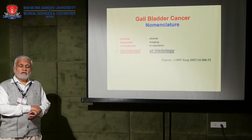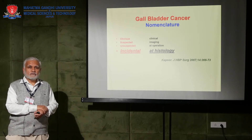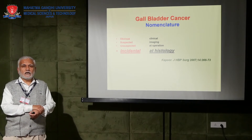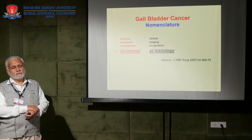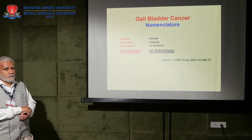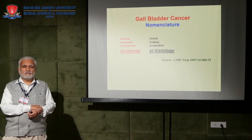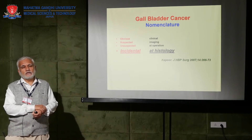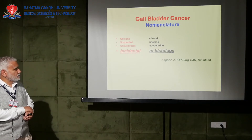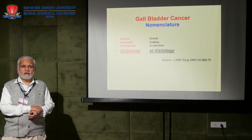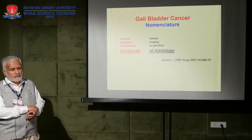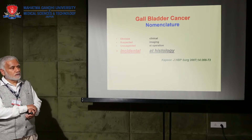Next, if even imaging findings are suggestive of gallstone disease only and the patient is taken up for a simple cholecystectomy for gallstone disease, but either during the operation or in the specimen there is any suspicion, then we propose that it should be called unsuspected gallbladder cancer. A true incidental gallbladder cancer is where up to this stage — that means up to the gross examination of the gallbladder specimen removed with the clinical and imaging diagnosis of gallstone disease — there is no suspicion of gallbladder cancer, and it is only on histopathology that a malignancy is detected. It should be called a true incidental gallbladder cancer.